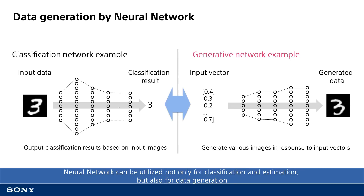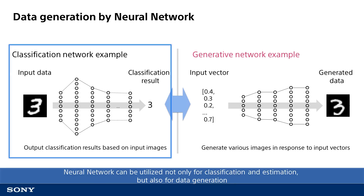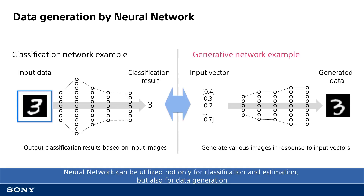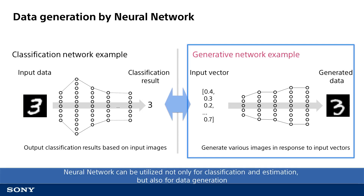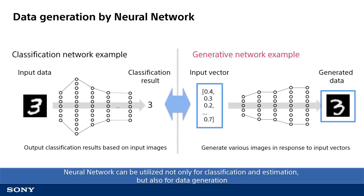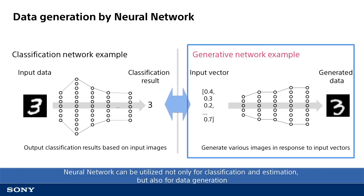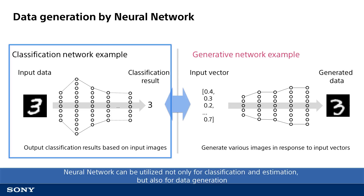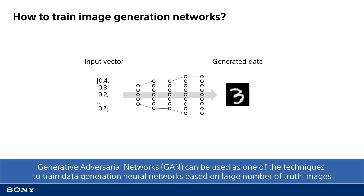Before we talk about GAN specifically, let's first start by going over how data is generated by neural networks. As discussed in the video on deep learning fundamentals, neural networks configured and trained to function as image classification systems can take an input of a handwritten digit image to determine the digit. Neural networks that generate data might output actual images in accordance with some input vector. Neural networks can also be used to generate data in addition to categorization of images and predictions based on input data.